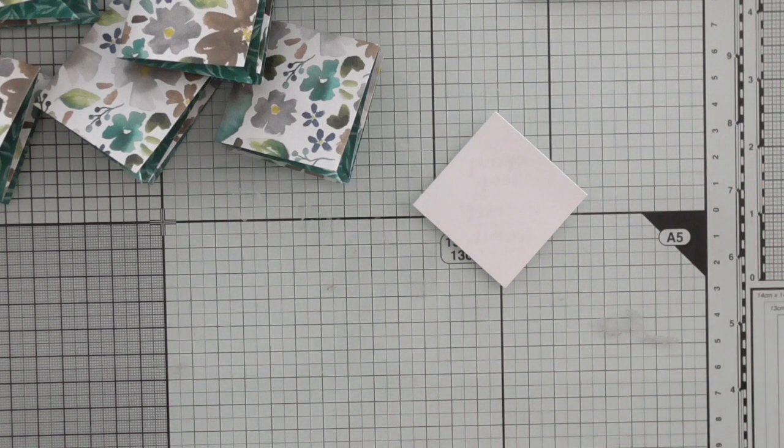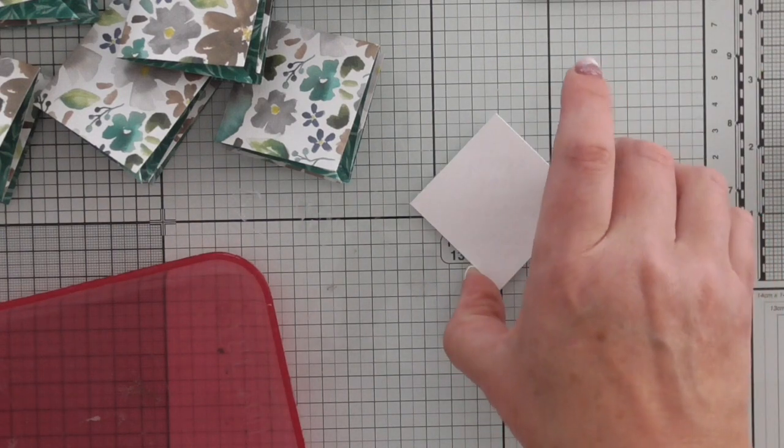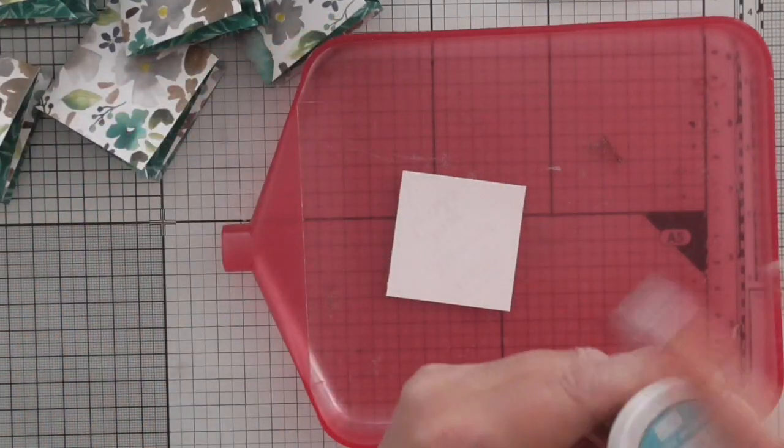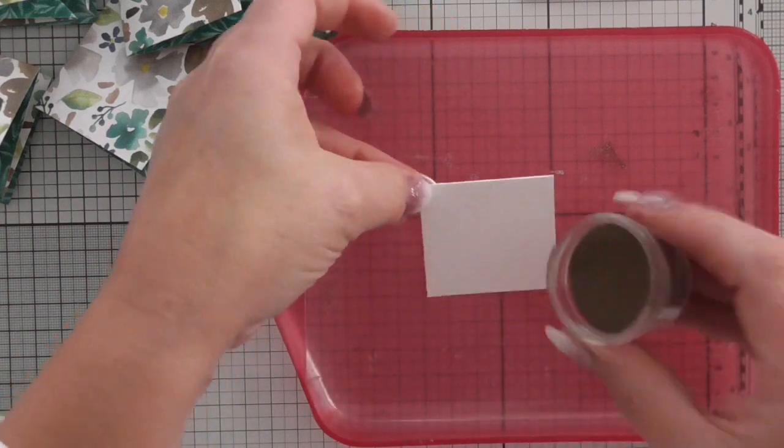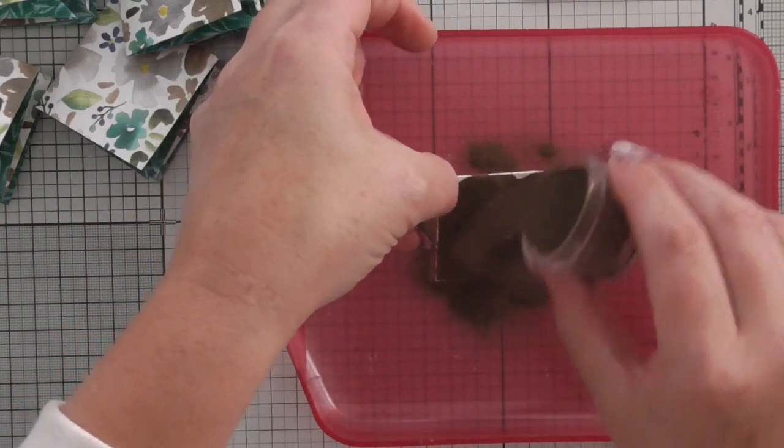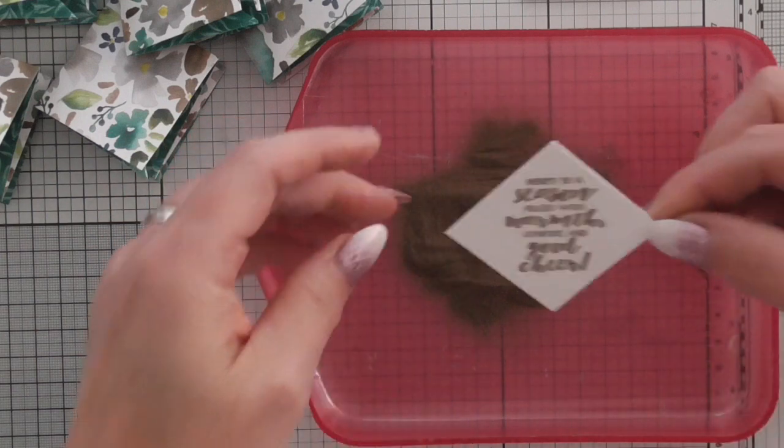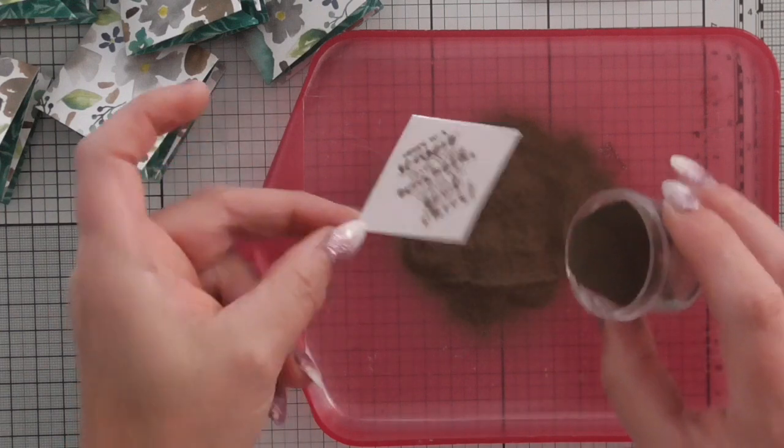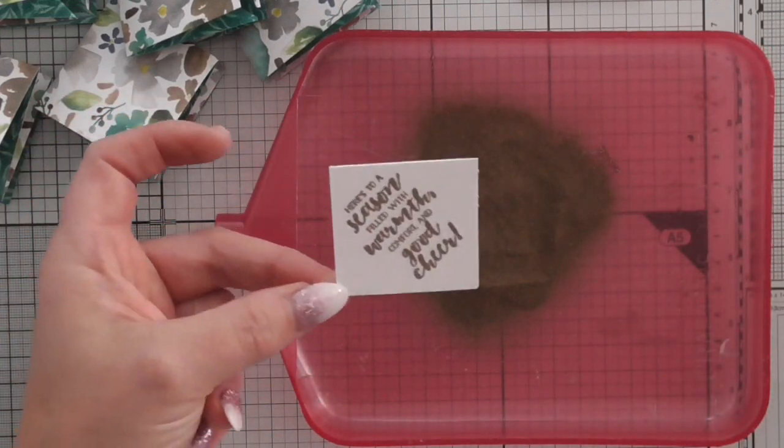And so I'm just going to press that and then just leave it a moment to make sure that that ink transfers nicely. There we go. Put my lid on. And then I'm using the gold stamping up embossing powder. So I'm just going to really carefully pop that in my tray. Cover it nicely with embossing powder.